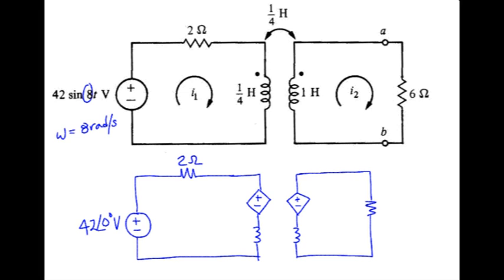Do the same thing for the other device. So the quarter henry inductor, we previously calculated as j2 ohms. The one henry inductor was j8 ohms. This is 6 ohms over there. And our two mesh currents in phasor form look like that.